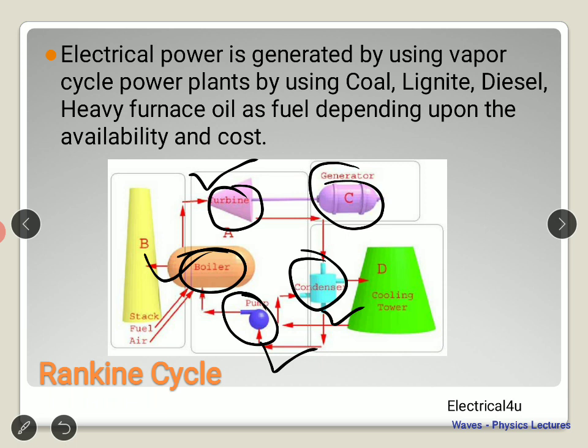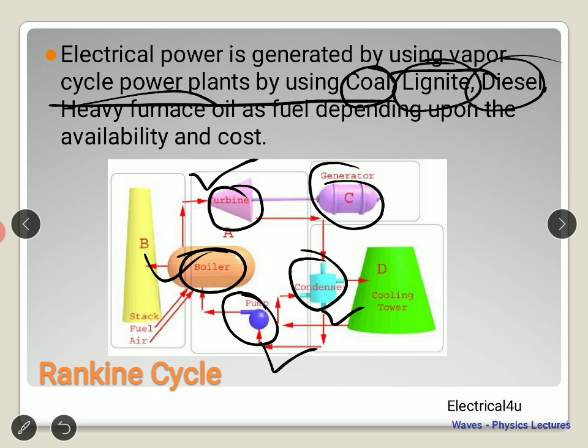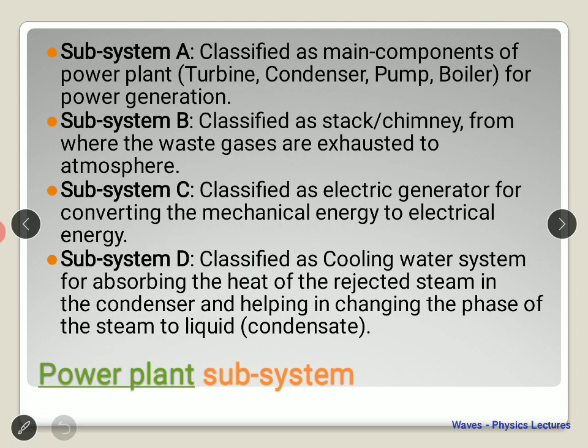The electrical power being generated by using the vapor cycle in power plants uses sources of fuel such as coal, lignite, diesel, heavy furnace oil, and so on. We've seen that in the last class and talked about different types of coals. It also depends upon the availability and the cost of the fuel that is actually needed.